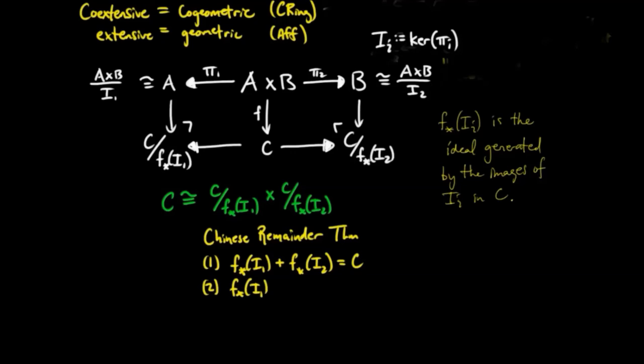Also we see that the intersection of these two ideals must be the zero ideal because of the same reasons as we said before, I1 is isomorphic to B and I2 is isomorphic to A.